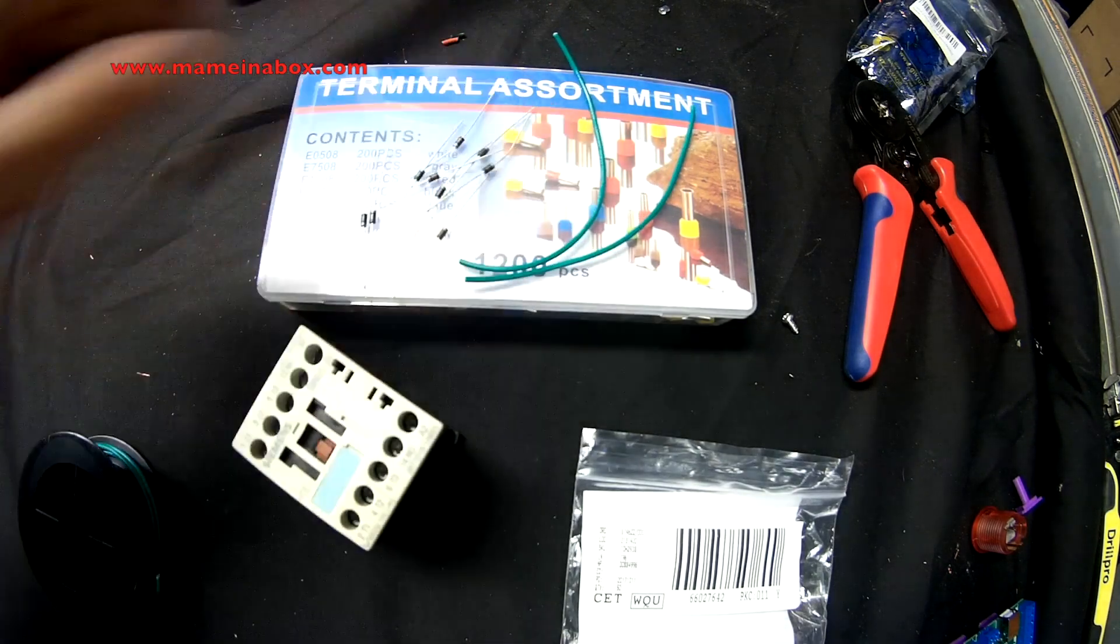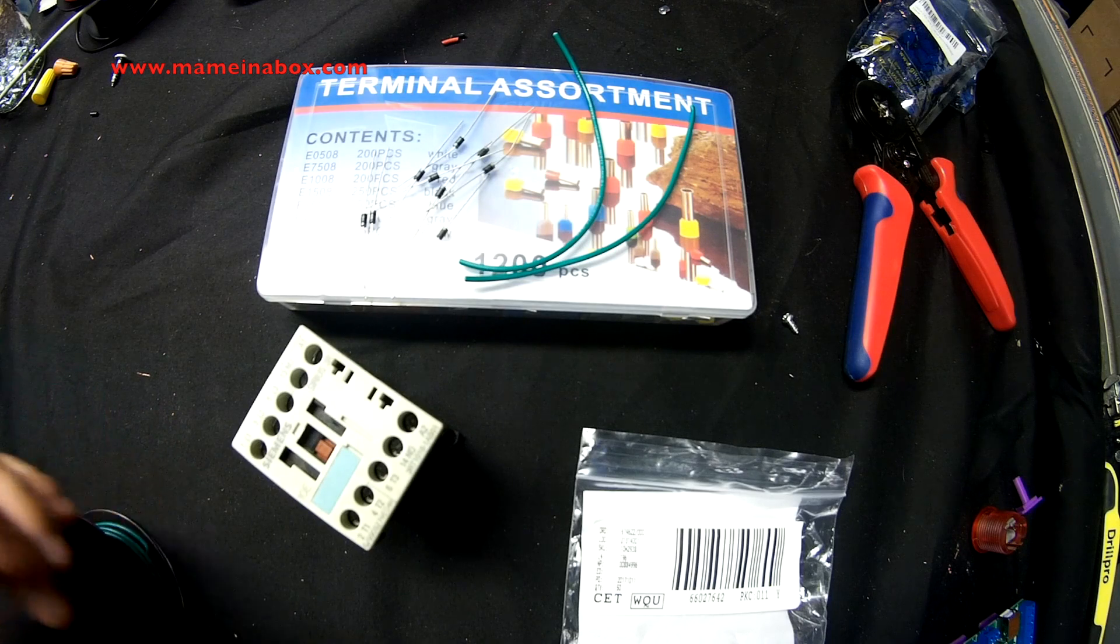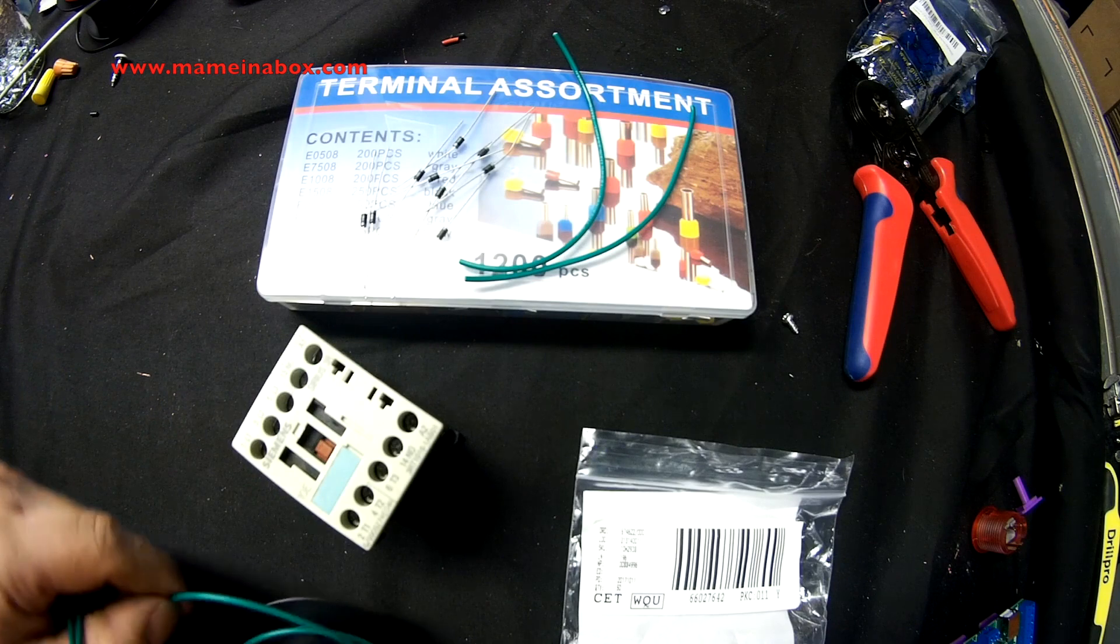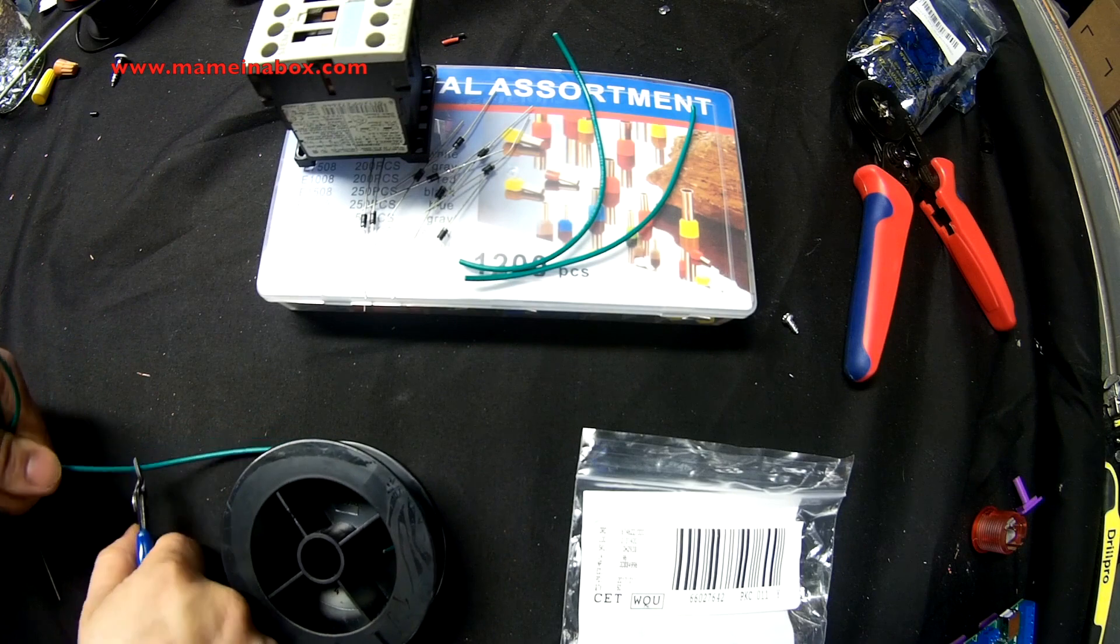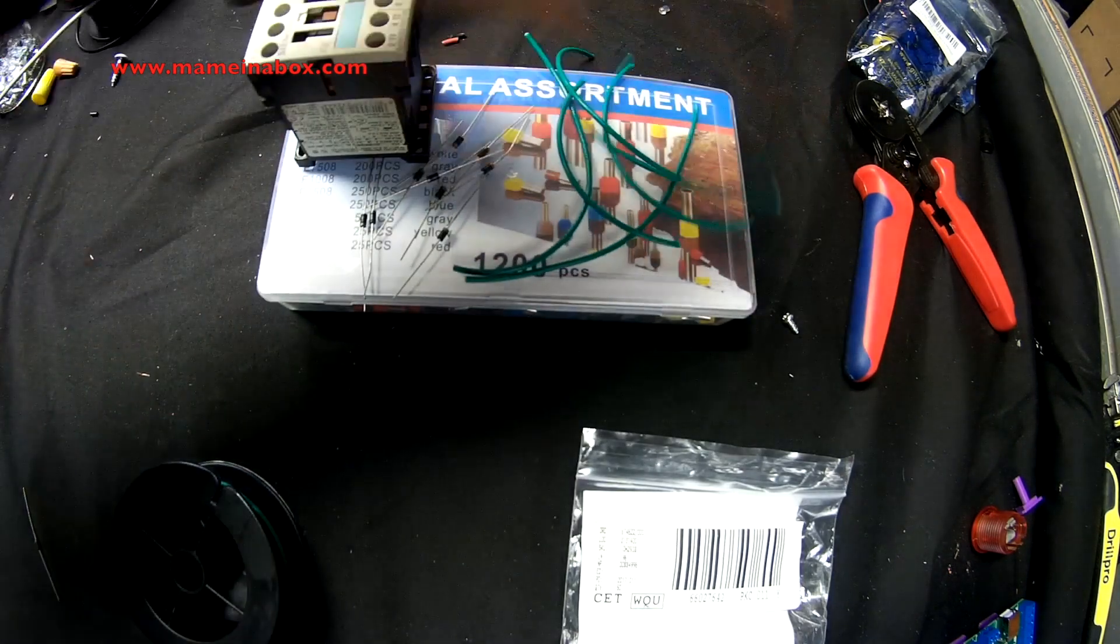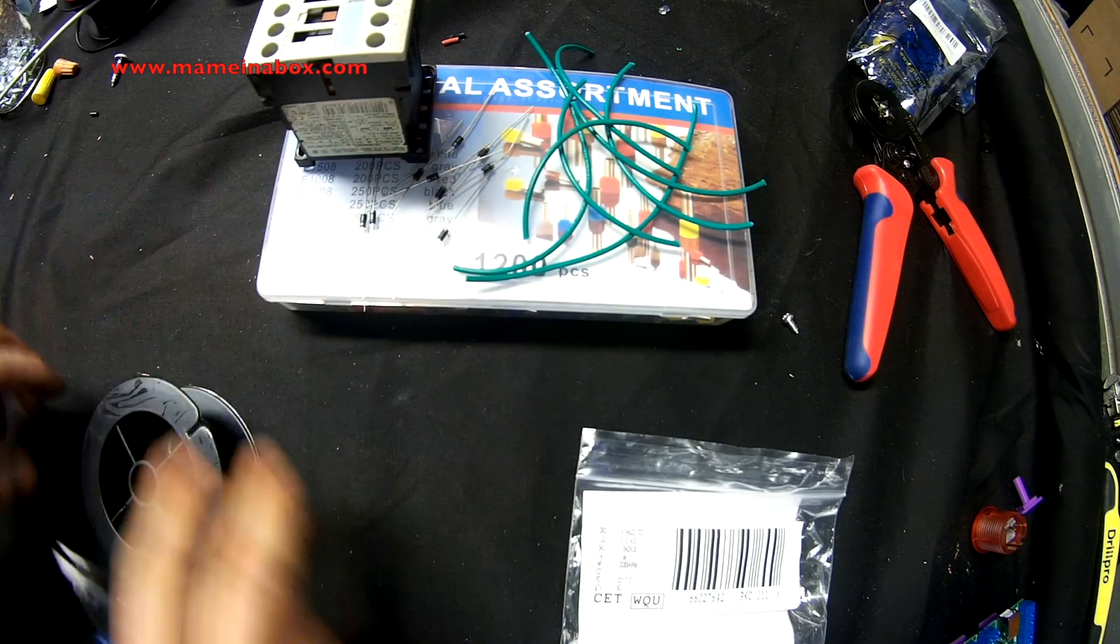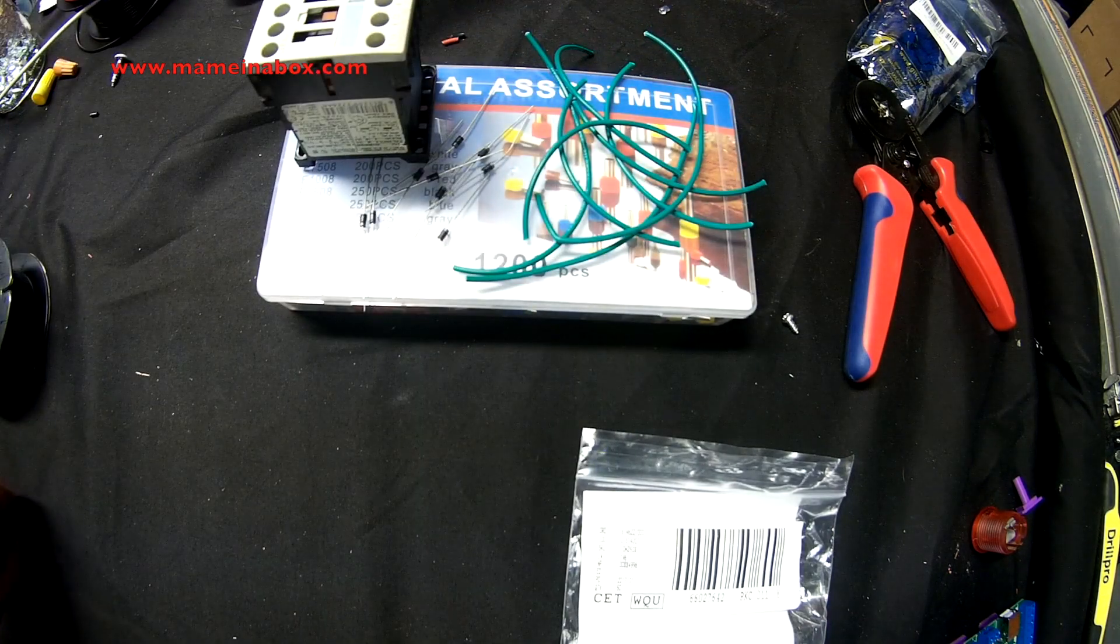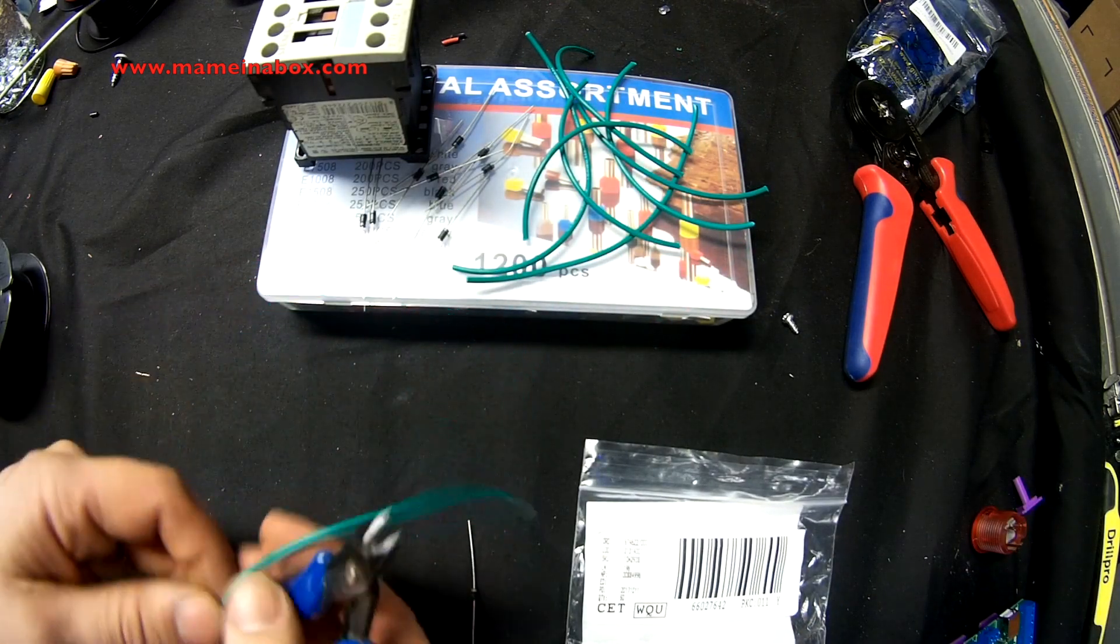The diodes that we're going to use are 1N4004, 400 volts, 1 amp. This is what we're using. And the tools that we're going to use are very simple. Little clippers or pliers. We're going to use the diode, wire gauge I think it's 18, and we're going to use a crimper and the little end piece that we're going to insert in the contactor.